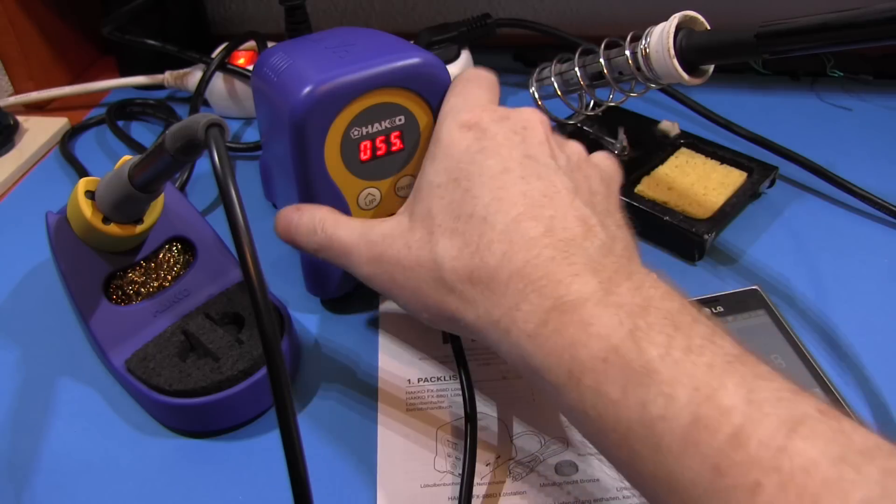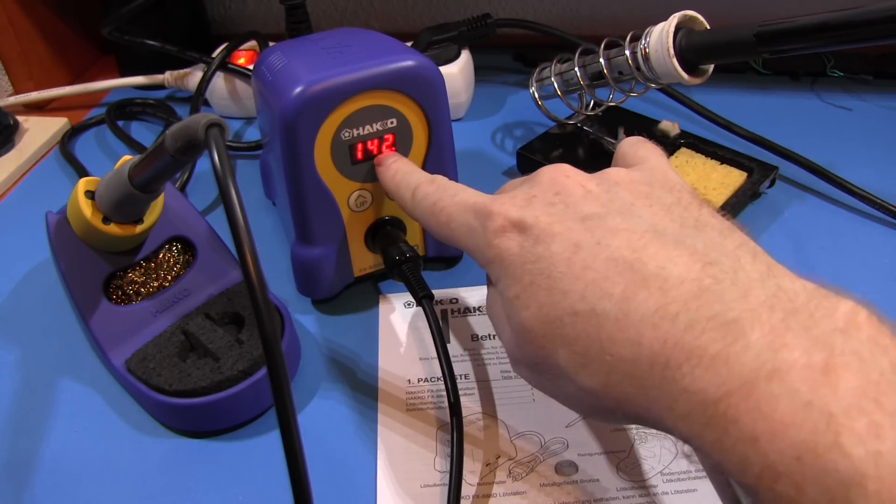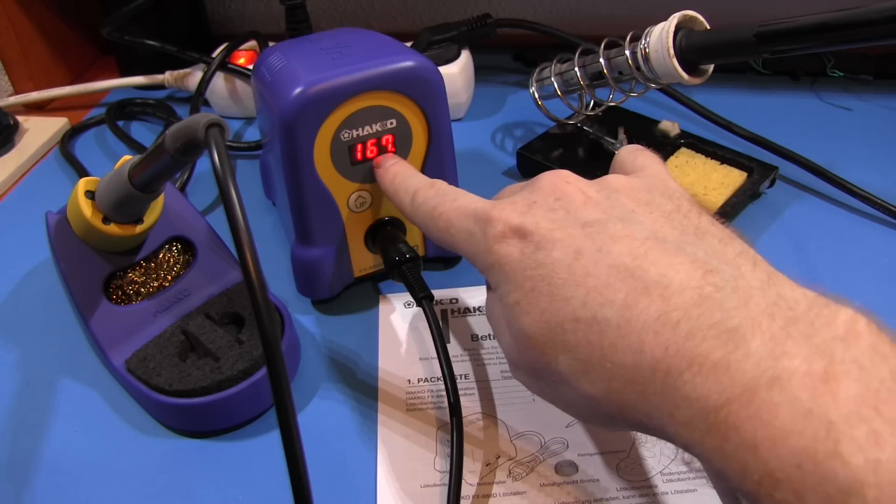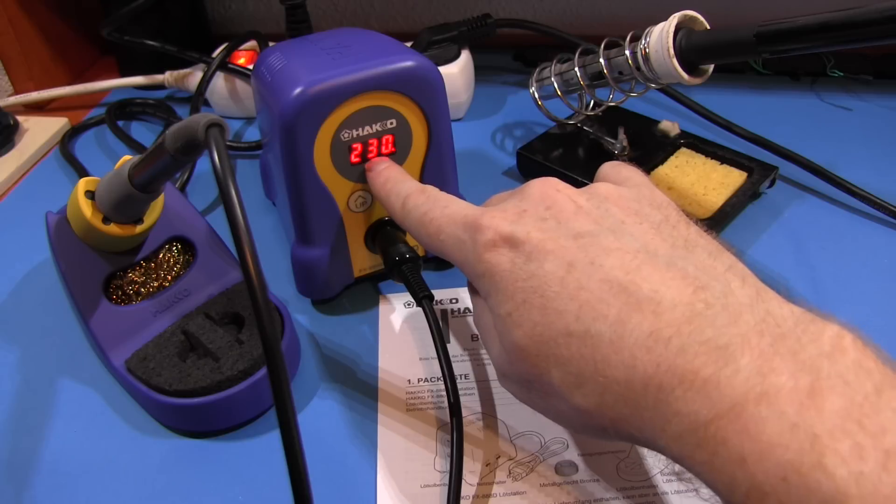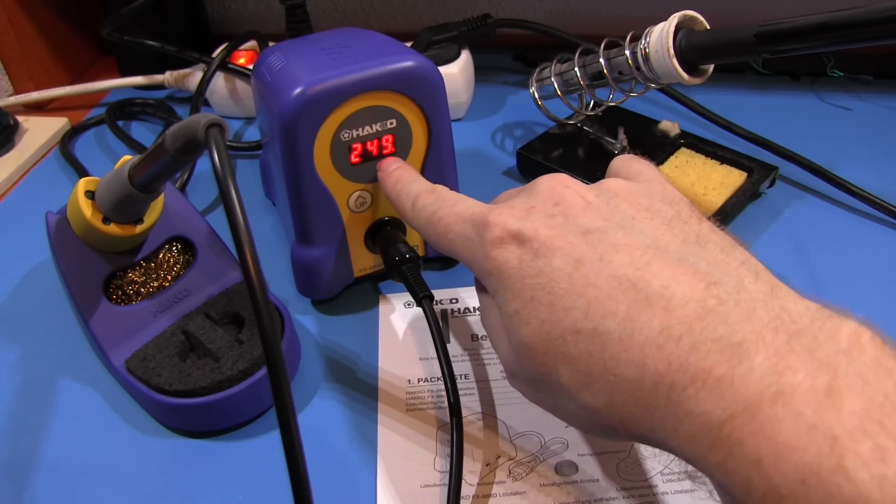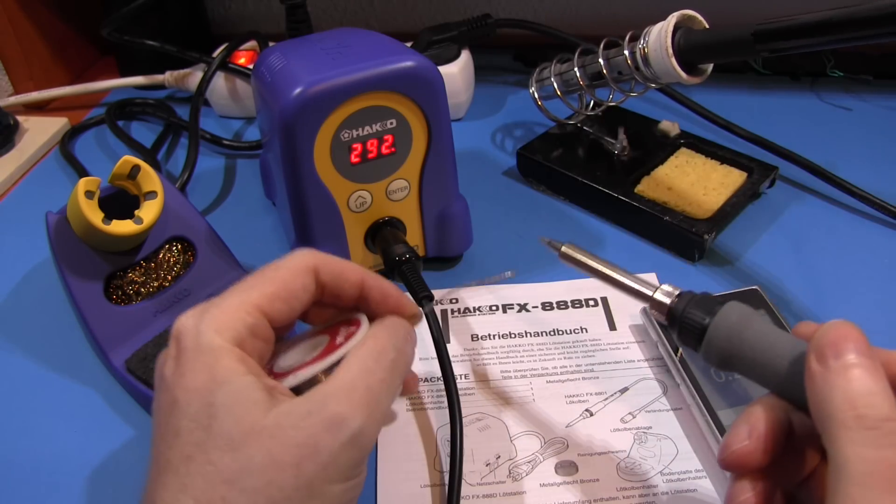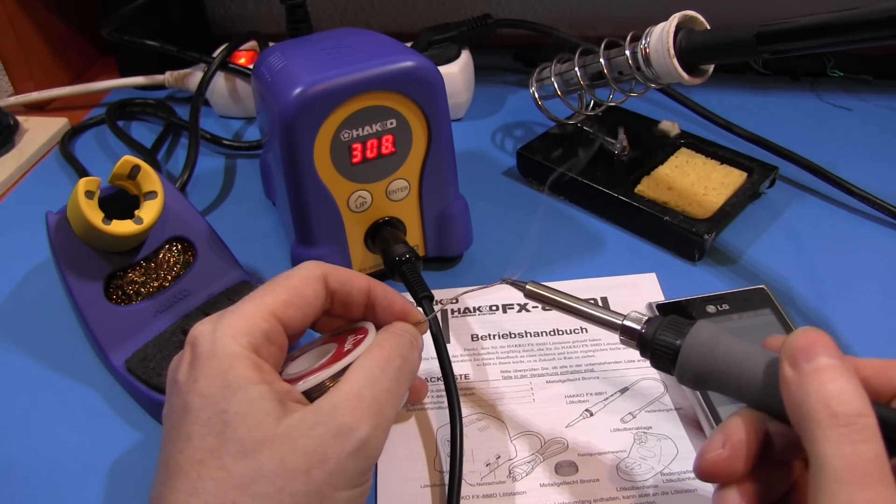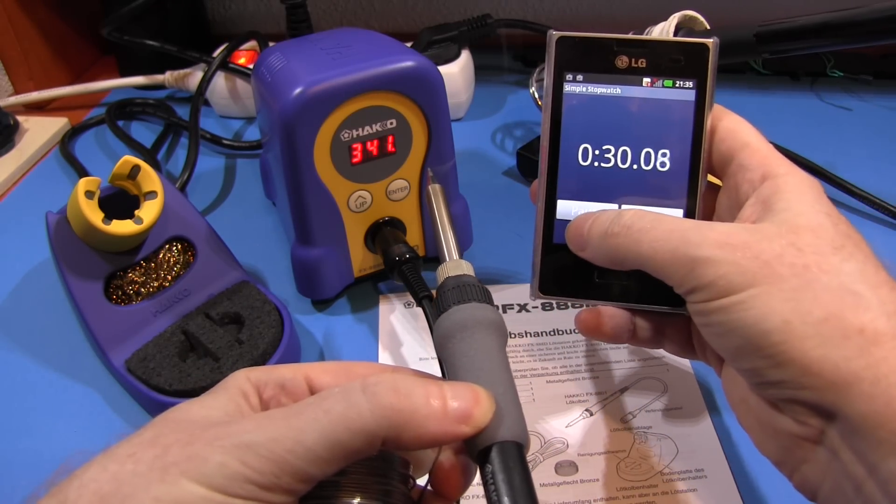And we're off. Any sign of life? 350. That must be the preset temperature. Hey, look at this. Cool. So it actually shows you the temperature in real time. 150, 160. Wow. This is fast. 230, 240, 250. So it should be about solder temperature already. Check it out. Yep, it's melting. Under 30 seconds. Wow.